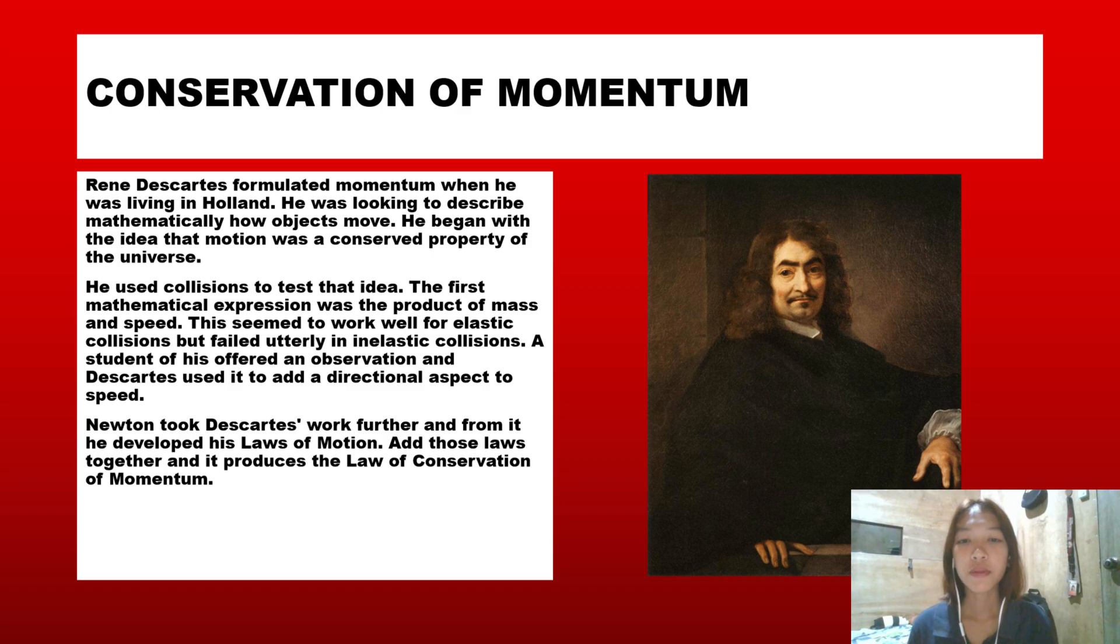René Descartes formulated momentum when he was living in Holland. He was looking to describe mathematically how objects move. He began with the idea that motion was a conserved property of the universe. He used collisions to test the idea. The first mathematical expression was a product of mass and speed. This seemed to work well with elastic collisions but failed utterly in inelastic collisions.